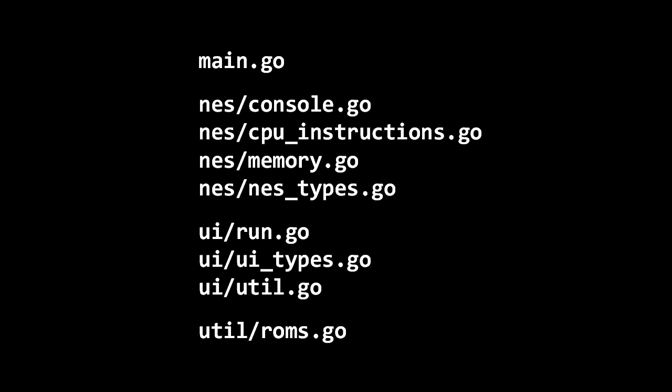Looking at the NES package files: console.go has most of the core logic; cpu_instructions contains the core function that executes an instruction on the emulated CPU; memory.go contains most of the logic for how addresses are handled; and nes_types has all the types, constants, and init. I typically put all types in one file per package. For the UI package, run.go is the core logic where the kickoff function called from main.go lives; ui_types has all the types, constants, and init; and util.go has miscellaneous utility functions — I didn't really touch that file.